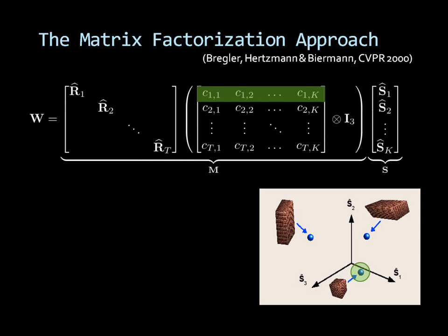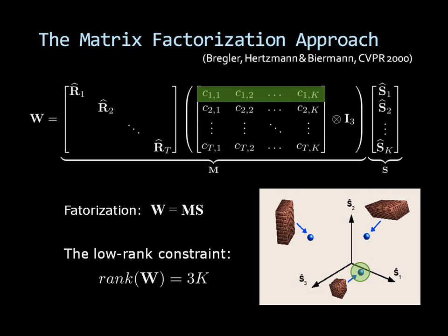W is represented as a product of two matrix factors, M and S, with a low rank 3K, where K is the number of basis shapes.